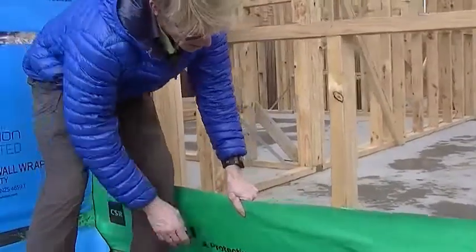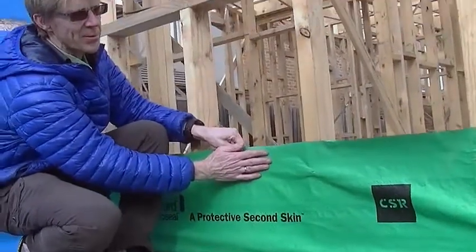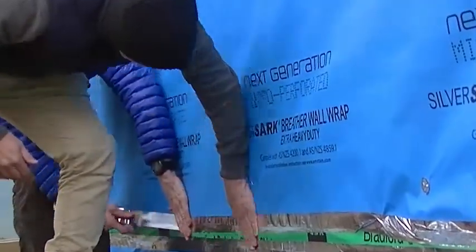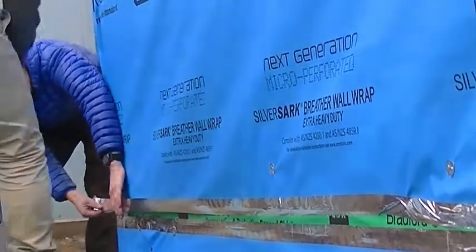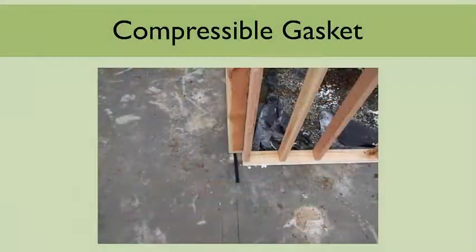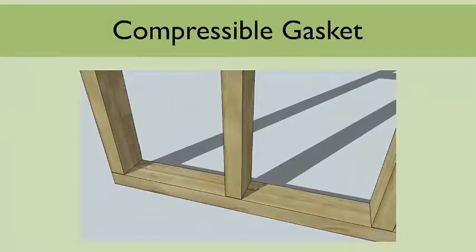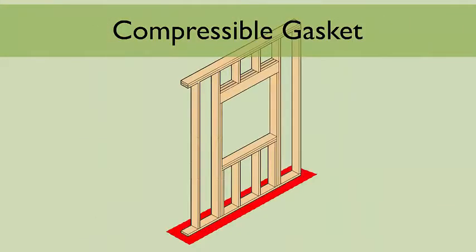The plaster and the plywood subfloor serve well as air barrier surfaces, but one surface has to be connected to the other. The APA solution is a compressible gasket between the components. One gasket is placed beneath the wall plate before the wall is picked up. Another gasket is applied to the face of the bottom plate before the plaster goes up. These two gaskets effectively carry the air barrier surface from subfloor to bottom plate to plaster.